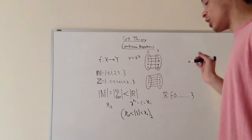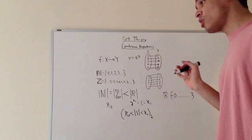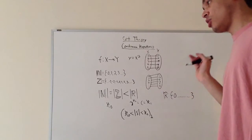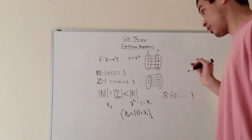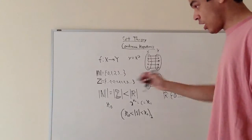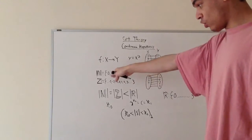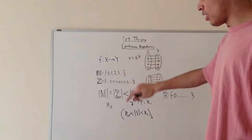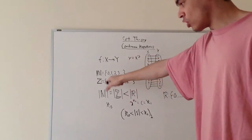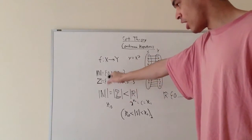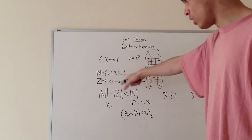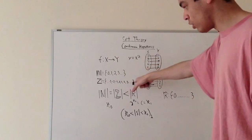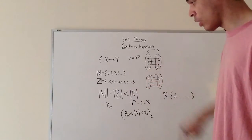Keeping that in mind, how does that apply to infinite sets? The naturals are like 0, 1, 2, 3, dot dot dot, and the integers are dot dot dot, negative 3, negative 2, negative 1, 0, 1, 2, 3, dot dot dot, all the way.